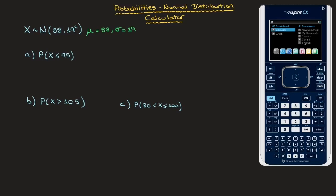The first probability we need to find is the probability that X be less than or equal to 95. Before diving onto the calculator, let me say that in an exam, whether or not we're asked, I would always recommend students to make a sketch of the bell curve and the area that this probability corresponds to.